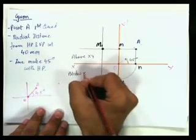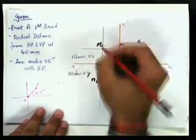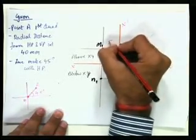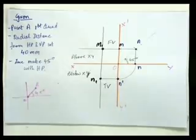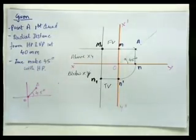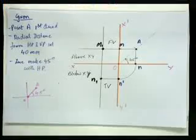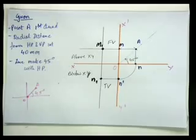So this is the solution of question number 2A. This is the projection that is required of the point that is given at a radial distance of 40 mm from the intersection of O, that is intersection of HP and VP, and it is at an angle of 45 degrees with respect to HP.